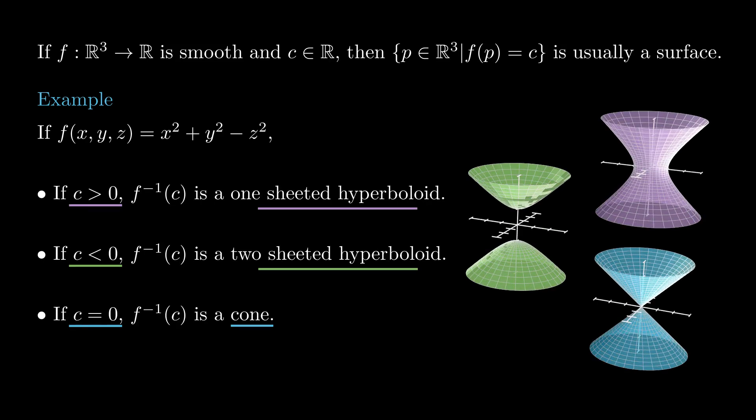if f is given by x squared plus y squared minus z squared, the preimage of a real number c is given by a one-sheeted hyperboloid if c is positive, a two-sheeted hyperboloid if c is negative, and a cone if c is zero.